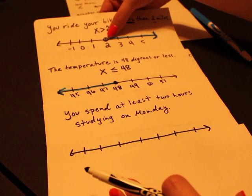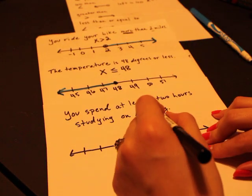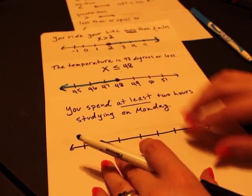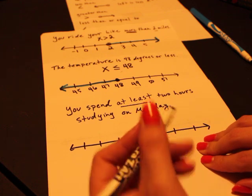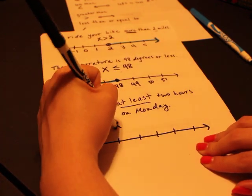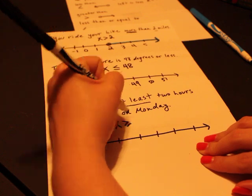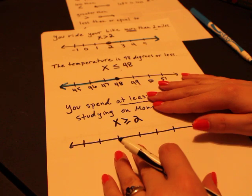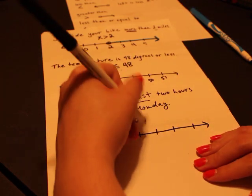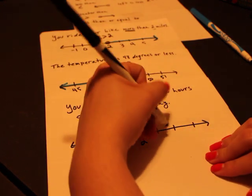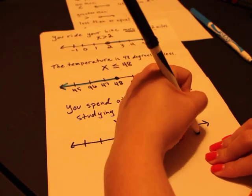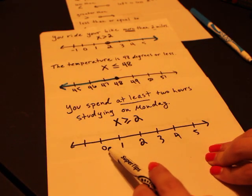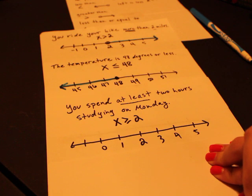You spend at least two hours studying on Monday. So at least—remember that's a greater than or equal to. So at least two hours: x is going to be greater than or equal to two because that means you can spend two hours, two and a quarter hours, three hours, however long. So again, two, just go here in the middle. Fill in our number line. And we wouldn't go past zero technically on our number line because could you study for negative hours? No.